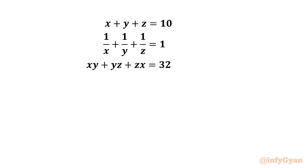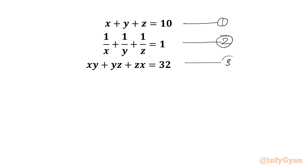x plus y plus z is 10, 1 over x plus 1 over y plus 1 over z is 1, and xy plus yz plus zx is 32. Let us get started by considering equation 1, equation number 2, and this will be equation number 3. Now I will begin with equation 2.